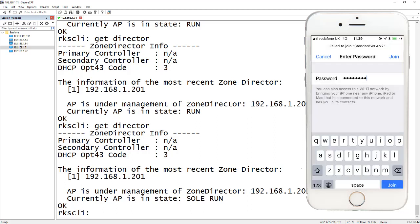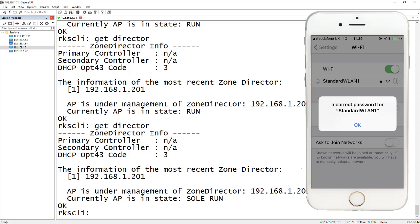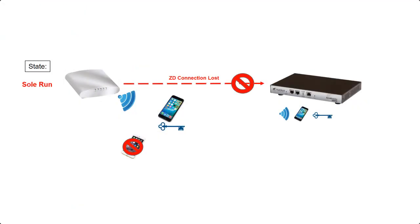Going back to standard WLAN one - we were previously connected, but this is now treated as a new connection, and we still won't be able to connect. So when an access point loses its connection to the Zone Director, clients connected to existing WLANs continue to be connected, however the access point will not accept connections from new clients. This situation lasts for 30 minutes by default, after which the access point will reboot, and any previously connected clients will also be unable to reconnect.